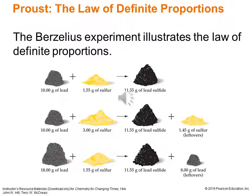Building on Proust, Jacob Berzelius, a Swedish chemist, performed a famous experiment illustrating the law of definite proportions. He took a fixed amount of lead and sulfur to make lead sulfide, and if done in exactly the right ratio — 10 grams of lead to 1.55 grams of sulfur — he ended up with 11.55 grams of lead sulfide. The overall mass stays the same (conservation of mass) and the proportion stays the same. If he almost doubled the sulfur, he still got the same mass of lead sulfide, with 1.45 grams of excess sulfur left over.